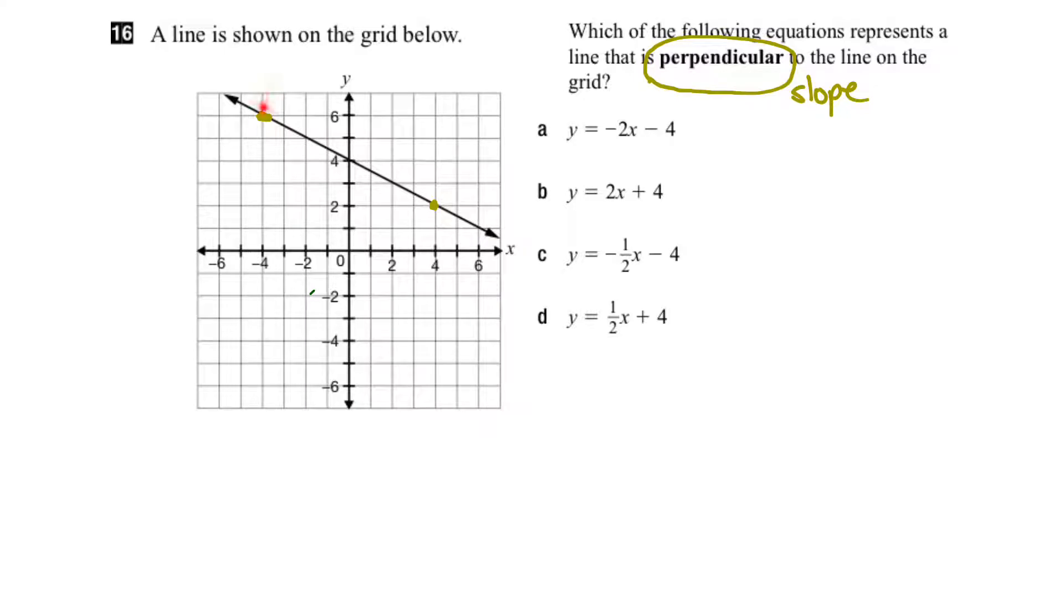And to get from this point to the other point, I'd have to go down 1, 2, 3, 4, and then over 1, 2, 3, 4, 5, 6, 7, 8. So in other words, the rise in this case would be negative 4, and the run would be 1, 2, 3, 4, 5, 6, 7, 8.